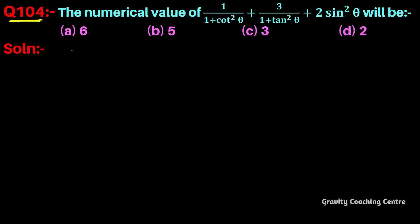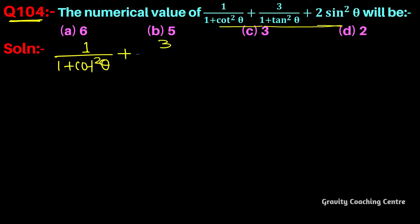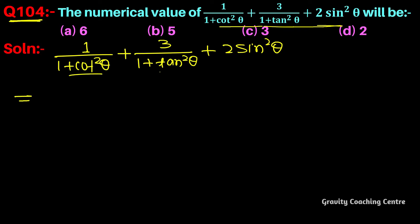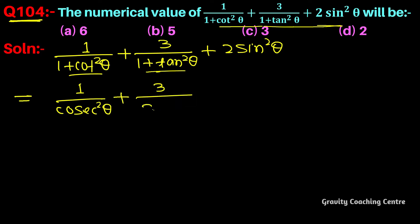Question number 104. The numerical value of this expression: 1 by 1 plus 4 sin²θ, plus 3 by 1 plus 10 sin²θ, plus 2 sin²θ, plus terms involving 4 sin²θ and 10 sin²θ plus 1.